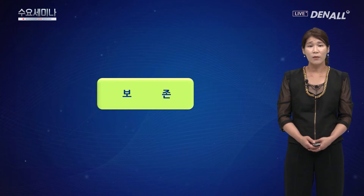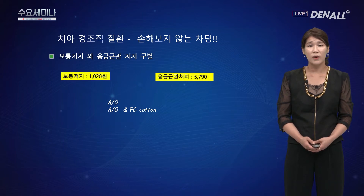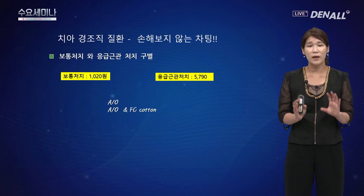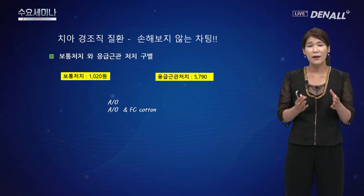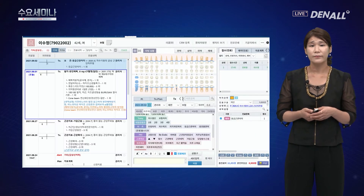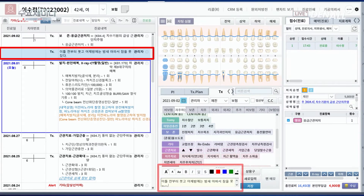보전 파트에서 손해보지 않는 차팅 방법입니다. 차트에 'Access Opening'으로만 작성하면 보통 처치인지 응급근관처치인지 혼란스러울 수 있습니다. 두 술식은 수가 차이가 약 5배 정도 납니다. 응급근관처치를 청구하려면 차트에 응급적인 상황이었다는 내역이 적혀 있어야 하며, 응급근관처치를 선택하면 상병이 자동으로 급성 상병으로 세팅되고 내역 설명도 반드시 입력해야 합니다.